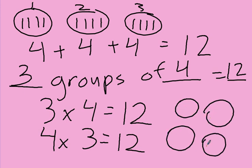I'm going to put three in each group, and now I'm going to count them all up — one, two, three, four, five, six, seven, eight, nine, ten, eleven, twelve.